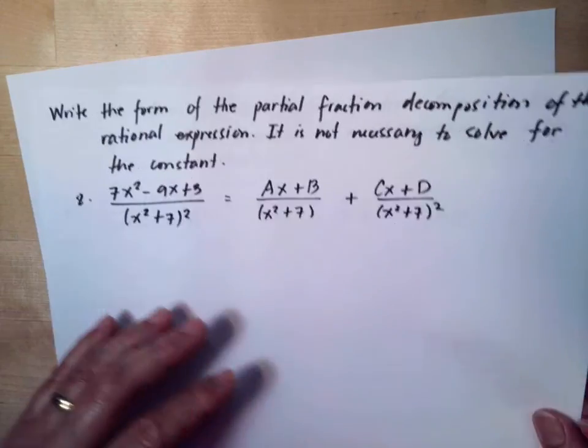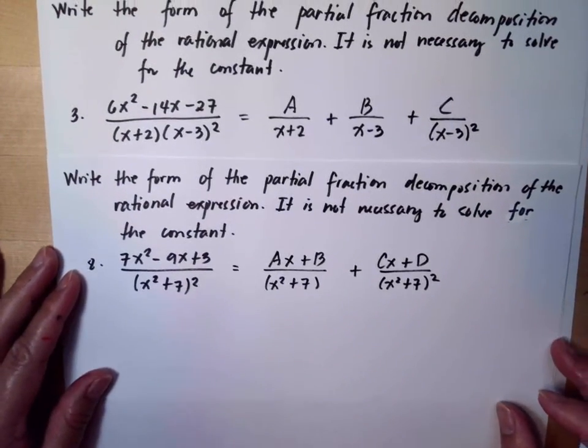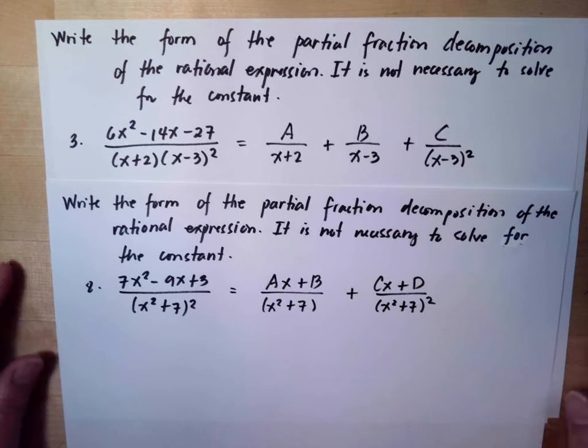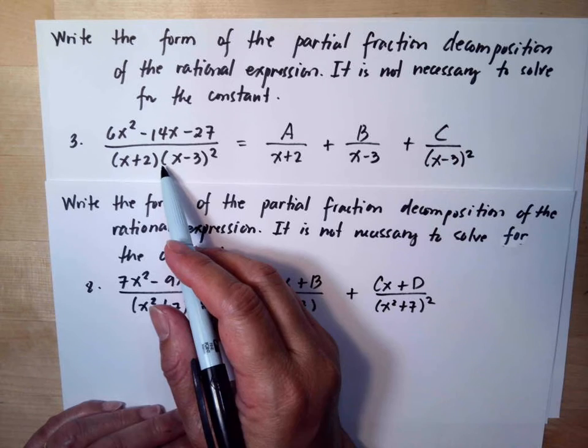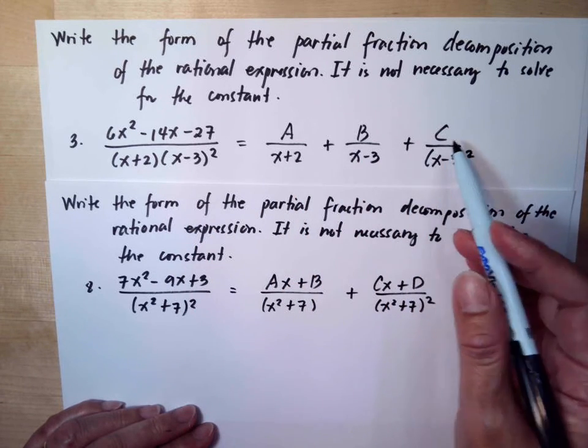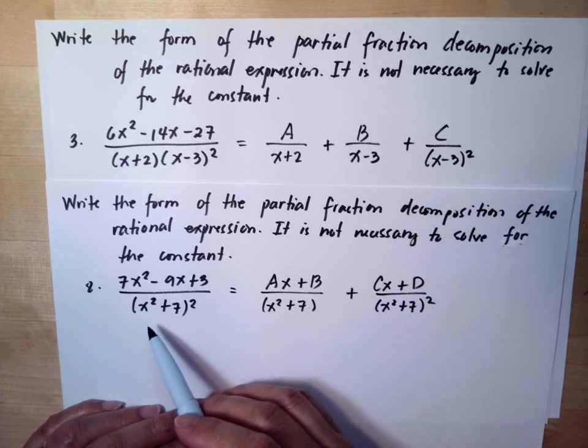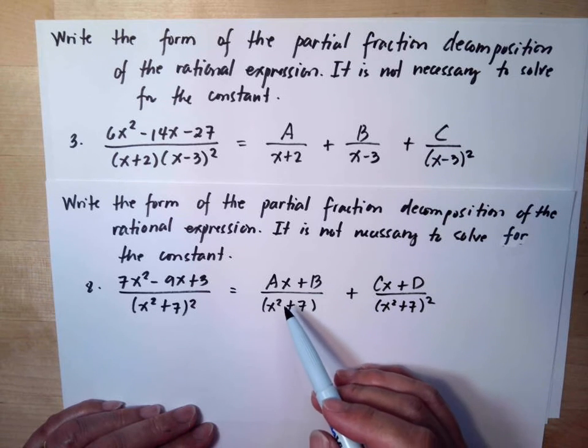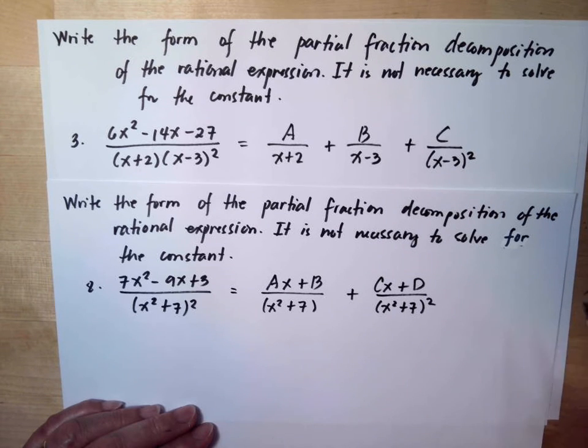You see the difference between the two, how you will solve this problem. If there is no squared in the x, you will just do A, B, C on top. But if it is squared in the denominator, then you need to start doing the Ax plus B, Cx plus D, and there is another one, you will say Dx plus F, etc.